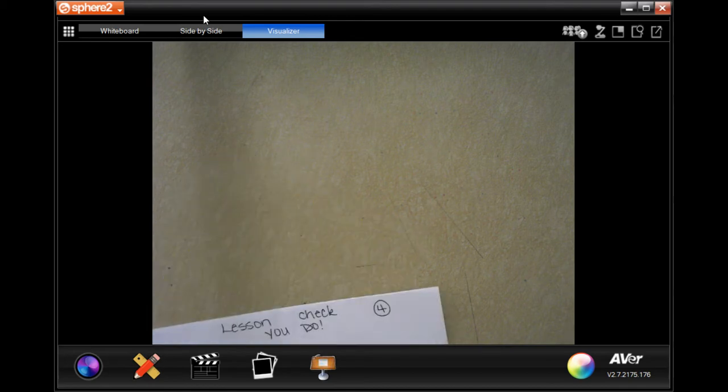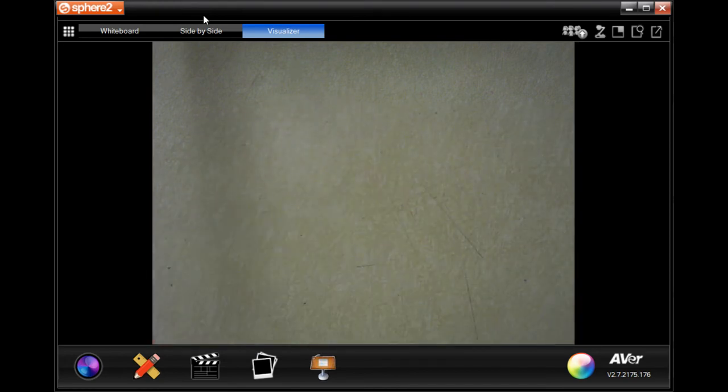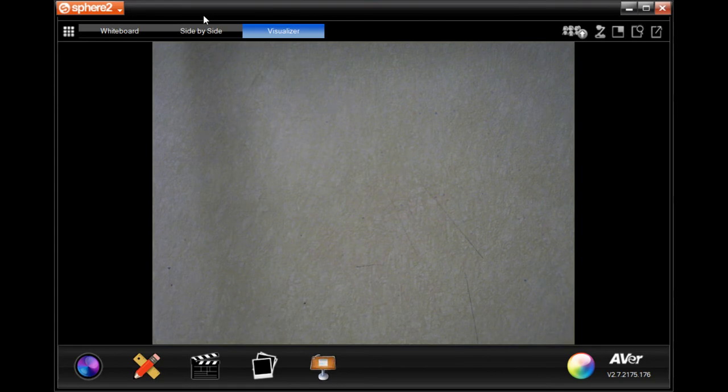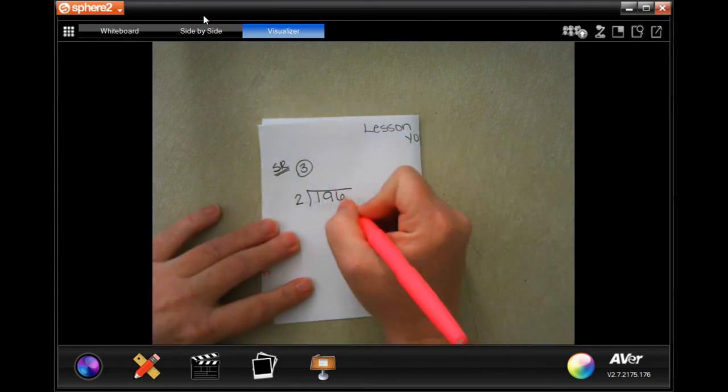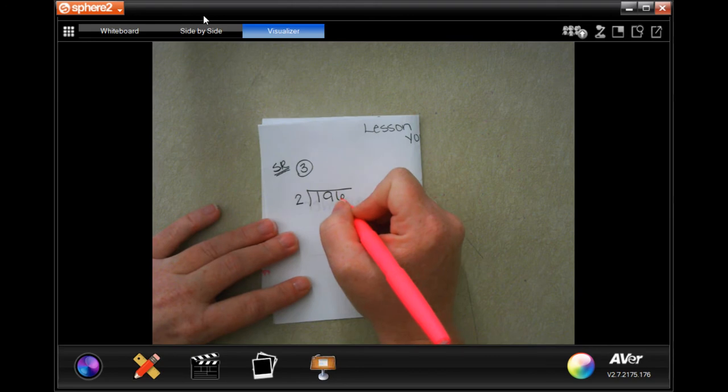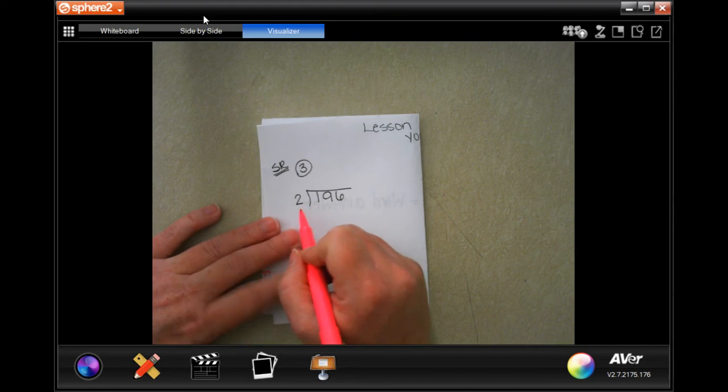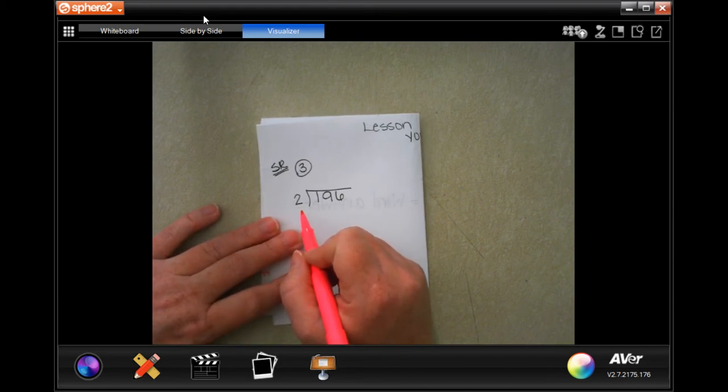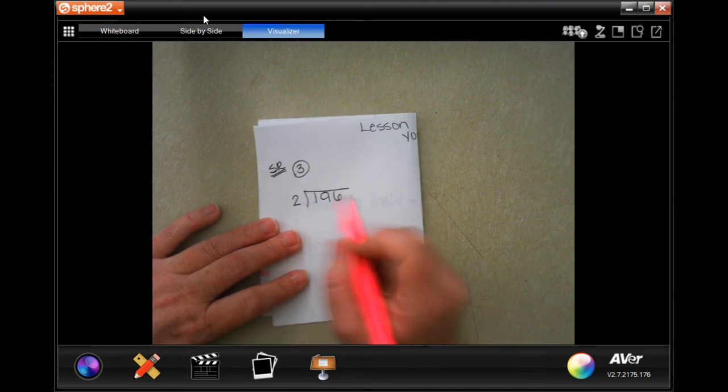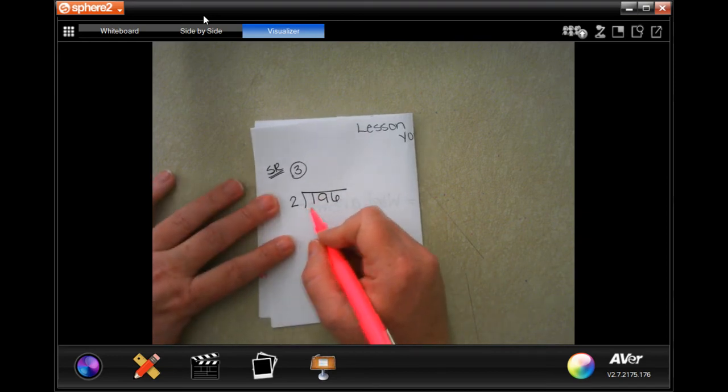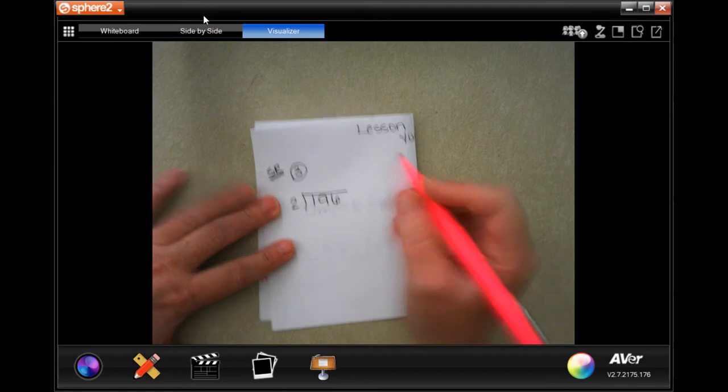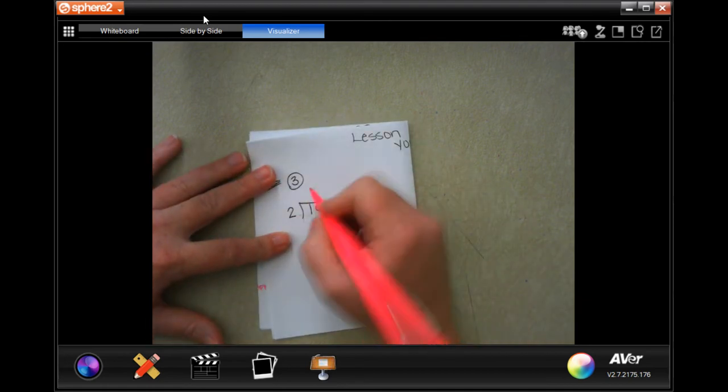Number 3 in spiral review says that Jason earns $196 each week bagging groceries at the store. He saves half of his earnings. So, whatever it is, we're dividing by 2. He saves half of his earnings each week. How much money does Jason have to save per week? So, in order to know how much he saves, we need to go ahead and divide.